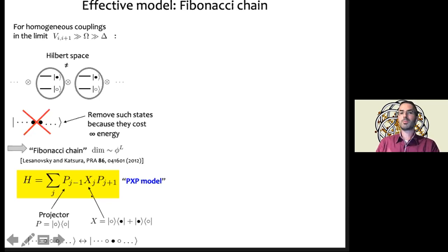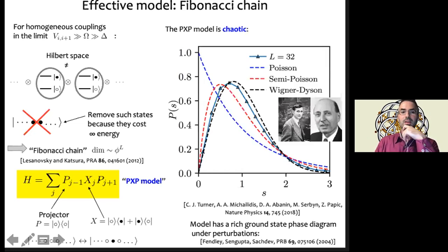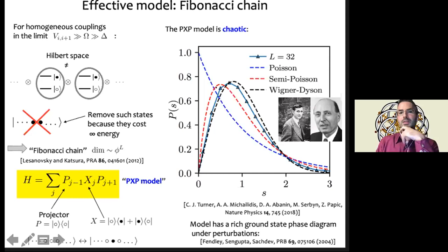The PXP model is really interesting and super simple to write down. Without the projectors P it would just be a simple paramagnet. Unfortunately, with the projectors it becomes chaotic — this is shown by numerically diagonalizing the Hamiltonian and computing the distribution of energy level spacings, which approaches the Wigner-Dyson distribution in sufficiently large systems. So the model is chaotic, and it would be foolish to hope to solve it exactly.